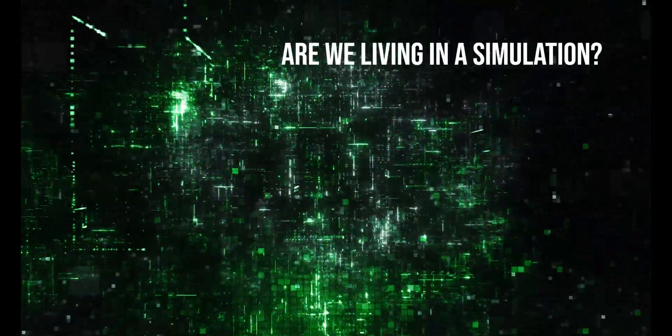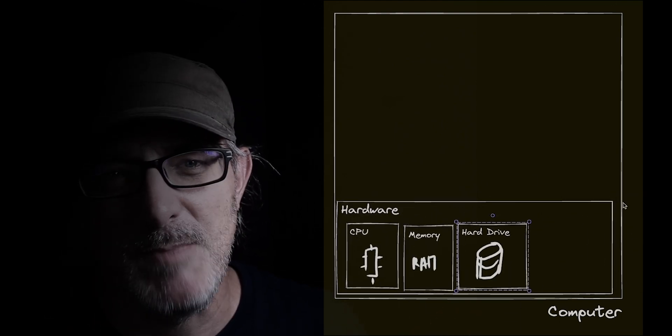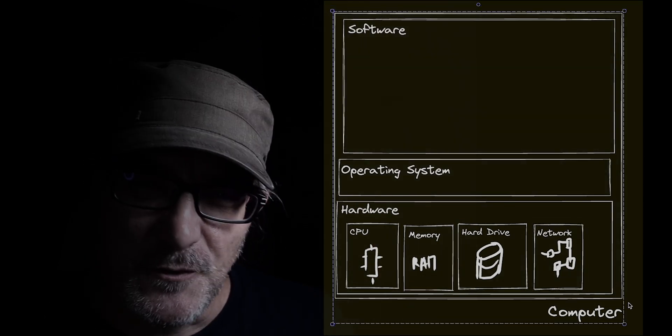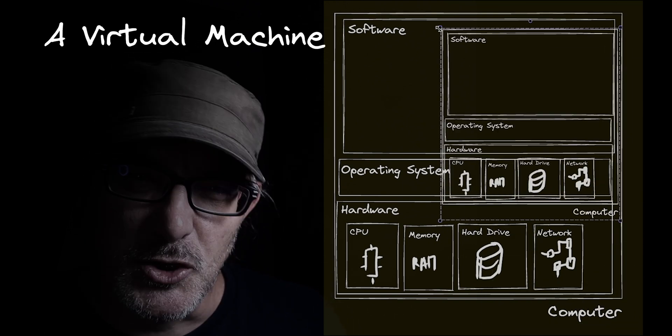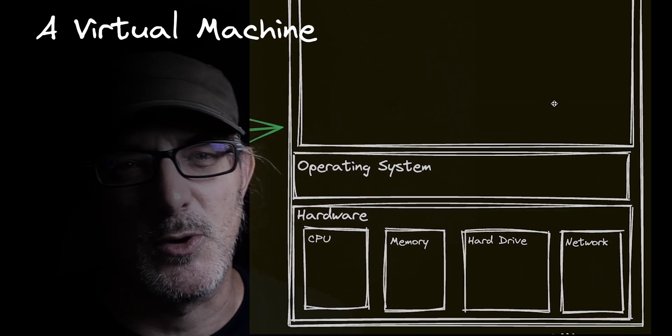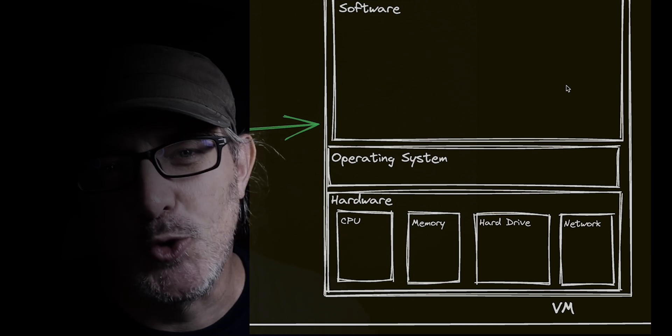The film The Matrix asks, are we living in a simulation? For virtual machines, the answer to that is yes. A virtual machine, or VM for short, is software pretending to be a computer. Our computers have hardware — a CPU, memory, a hard drive, and so on — and on top of that, an operating system, and on top of the operating system, software. The virtual machine lives in that software layer. A virtual machine is basically simulated hardware: it has a virtual processor, a virtual hard drive, virtual memory, and so on. It's software pretending to be hardware. The simulated hard drive contains a whole new operating system and software, which is what allows us, for example, to run Linux on Mac or on Windows.